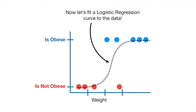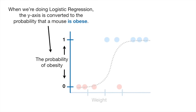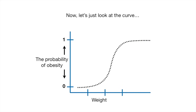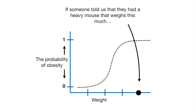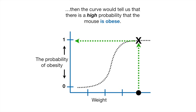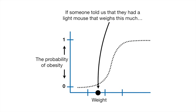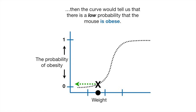Now let's fit a logistic regression curve to the data. When we're doing logistic regression, the Y-axis is converted to the probability that a mouse is obese. If someone told us they had a heavy mouse that weighs this much, the curve would tell us there is a high probability that the mouse is obese. If someone told us they had a light mouse, the curve would tell us there is a low probability that the mouse is obese.